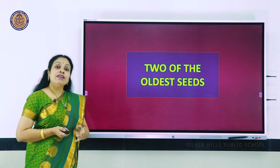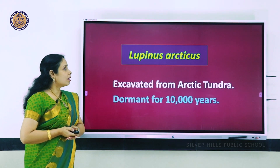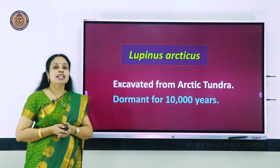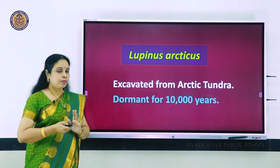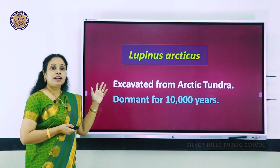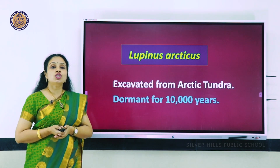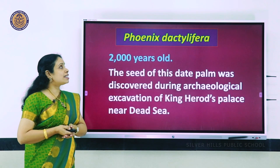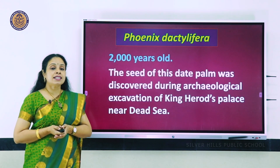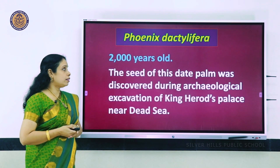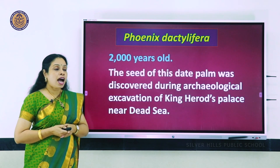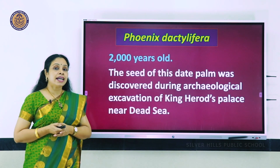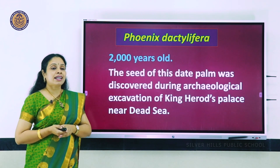Two of the oldest seeds discovered: one is Lupinus arcticus, excavated from the Arctic tundra and found to be 10,000 years old. Another is Phoenix dactylifera - a date palm seed, 2,000 years old, discovered during archaeological excavation of King Herod's palace near the Dead Sea.